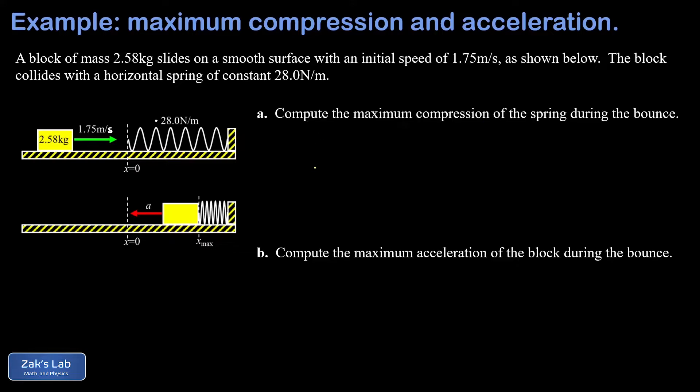The maximum compression part is an energy conservation question. I have initial kinetic energy in this initial state and there's no energy anywhere else in the problem. Then in the final state at the point of maximum compression, the block is turning around and it's momentarily stationary. That's the point where 100% of the kinetic energy has been converted into the potential energy of the spring.